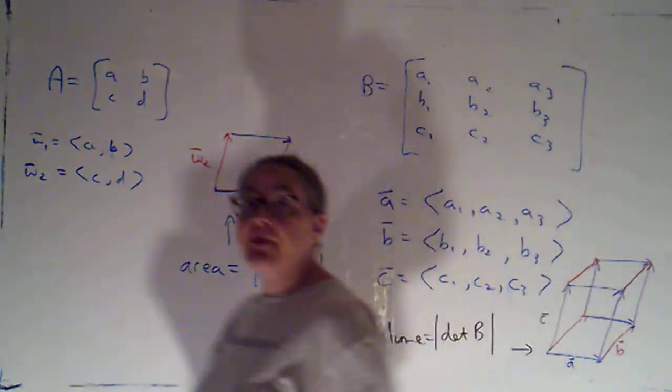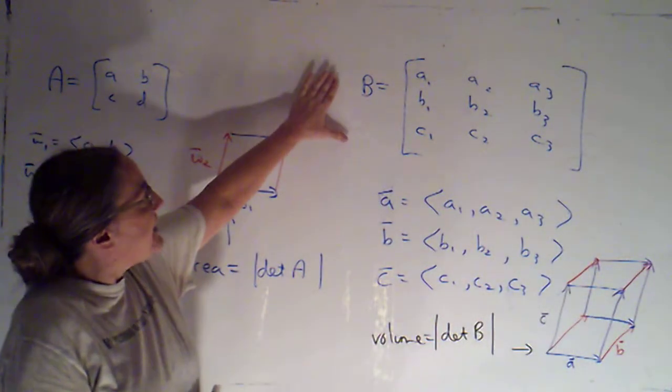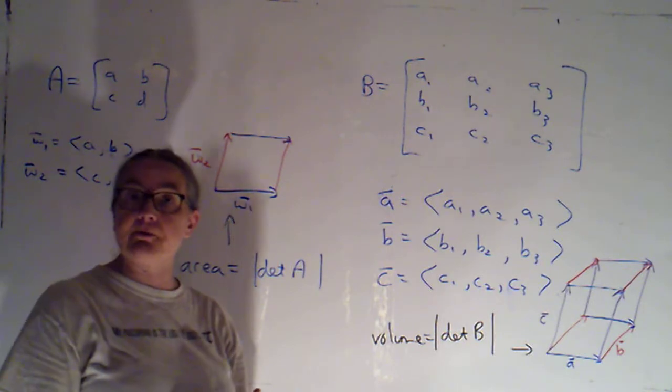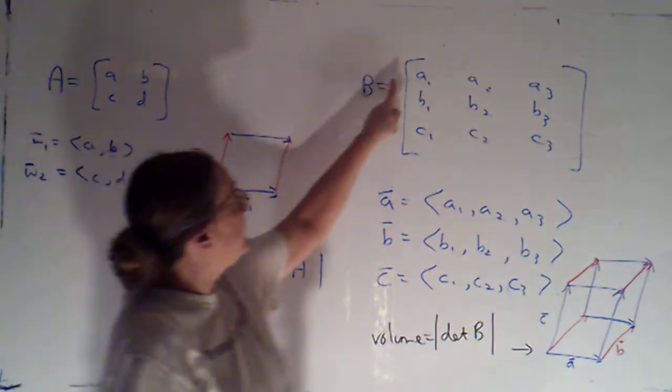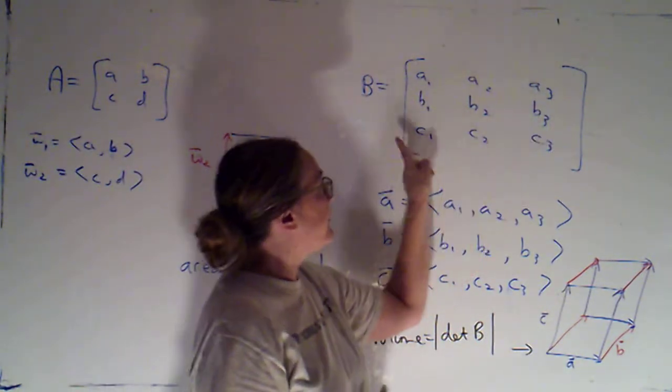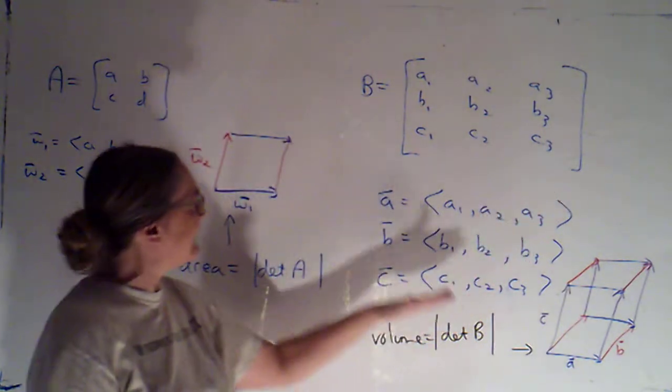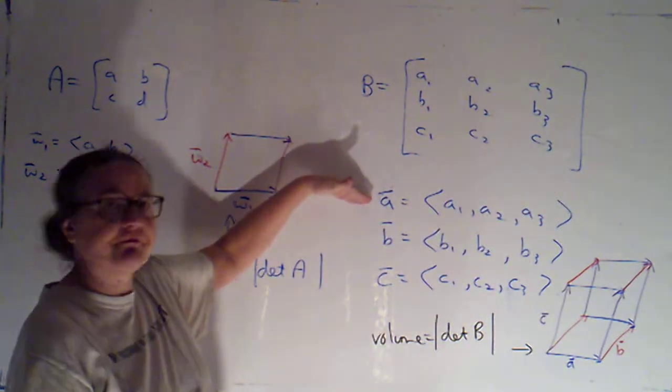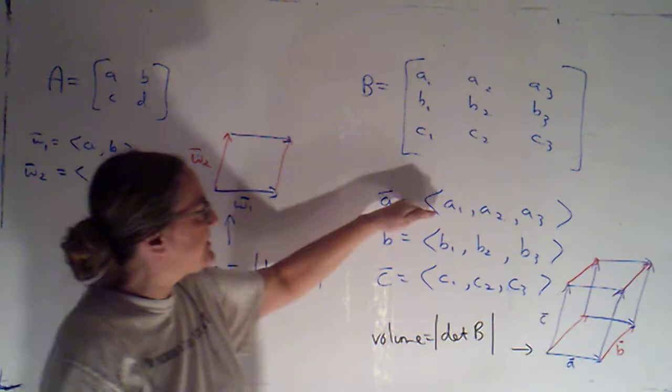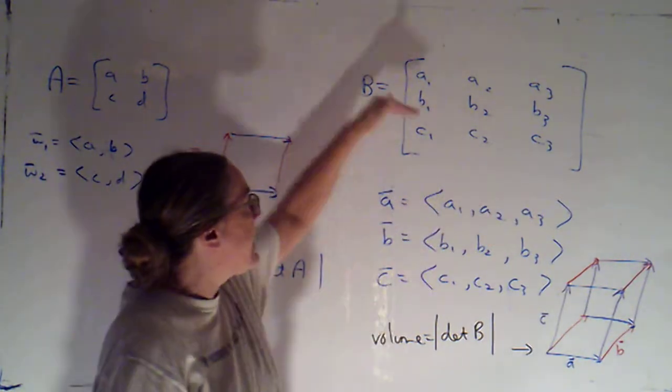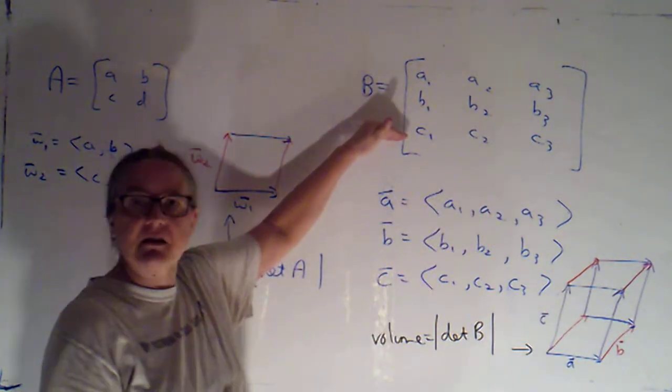Alright, now if I have a 3 by 3 matrix, I can view this as being made up of three vectors in three space. I could either think of it as being made up of the three rows. That's what I've done here. I said the vector A is the first row, with components A1, A2, and A3. B is the second row, and C is the third row.